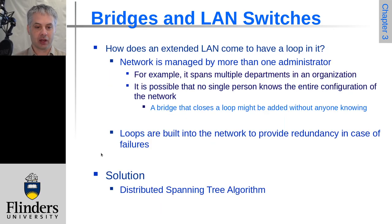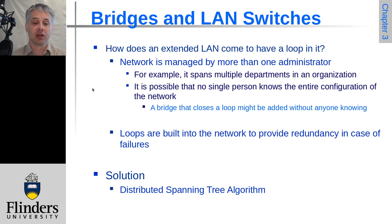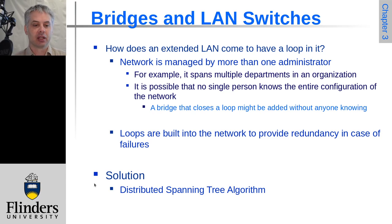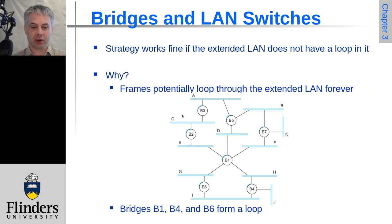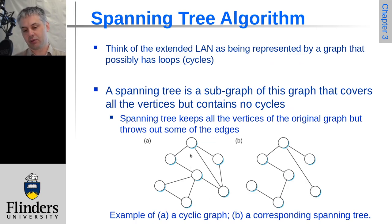Frames can loop through continuously. Loops can happen for a variety of reasons — it might be accidental where the network is very large and no one knows the entire layout, causing someone to accidentally close a loop edge, or loops might be put in intentionally to provide redundancy in case of failure. This is where the distributed spanning tree algorithm comes in. If we think of the LAN as a graph where each Ethernet is a node and bridge connections are the edges, the spanning tree algorithm works out which edges to remove to keep every node connected, but with no loops.